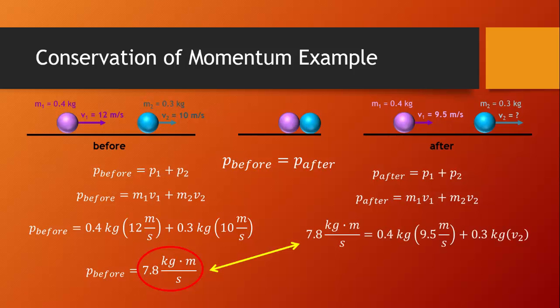We can also plug in the masses that we know and the velocity of the purple ball, which was given. If we solve for V2, we find that the blue ball after the collision is traveling 13.3 meters per second.